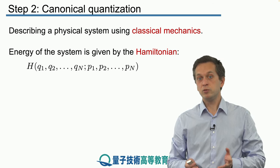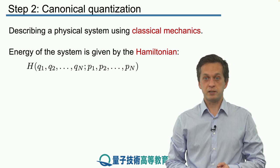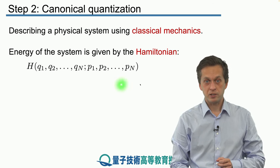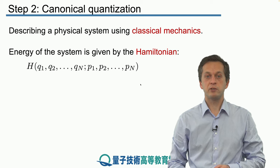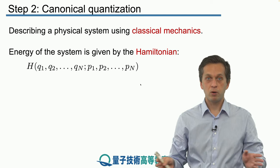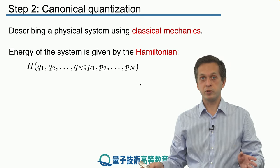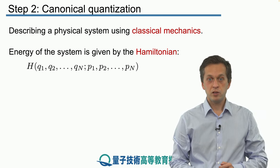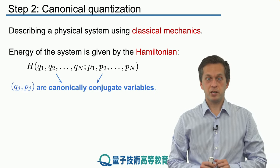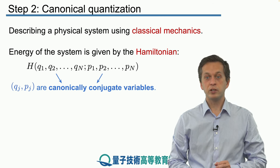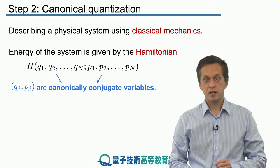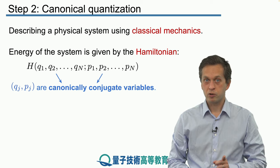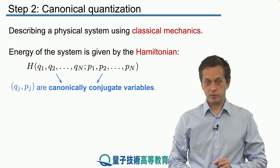In particular, what you do is you write the energy of the system, known as the Hamiltonian, which we denote by h. And this h is generally a variable of all of your q's and all of your p's, so all of your positions and all of your momenta. And these q's and p's, they've got a special name. They're known as the canonically conjugate variables, qj and pj. And they will play a crucial role in the canonical quantization process.